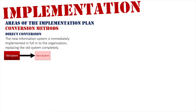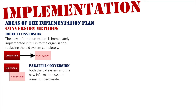The first conversion method is a direct conversion, where we get rid of the old system straight away and bring in the new system — it's an immediate turnover. It's the quickest and easiest to do. Secondly is a parallel conversion, where the old system and the new system are both being used by the organization at the same time. If there are any issues with the new system, the old system is still there, but the downside is you're entering data into two parallel systems, which means twice the work.